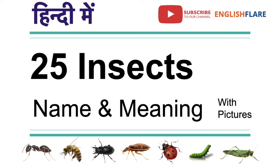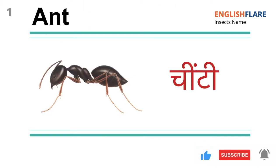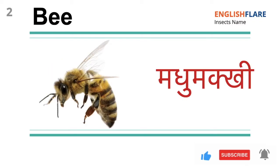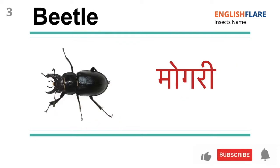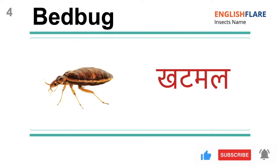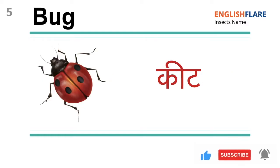25 insects name and meaning. Ant: Kitty. Bee: Madumakki. Beetle: Mogri. Bedbug: Khatmal. Bug: Keat.